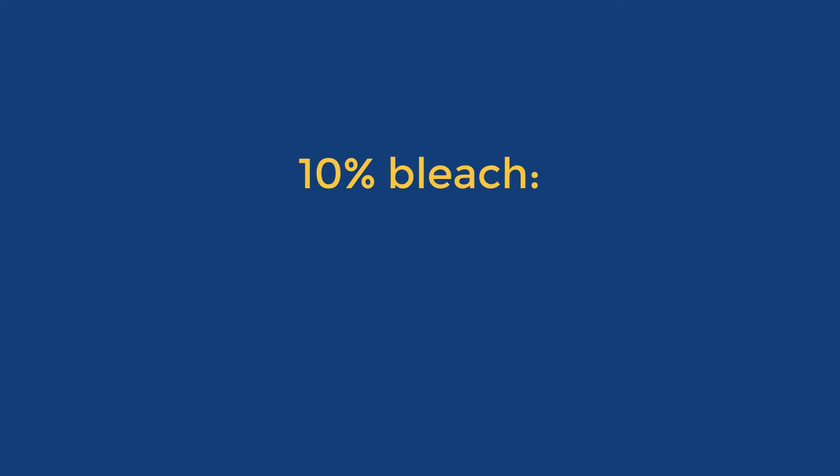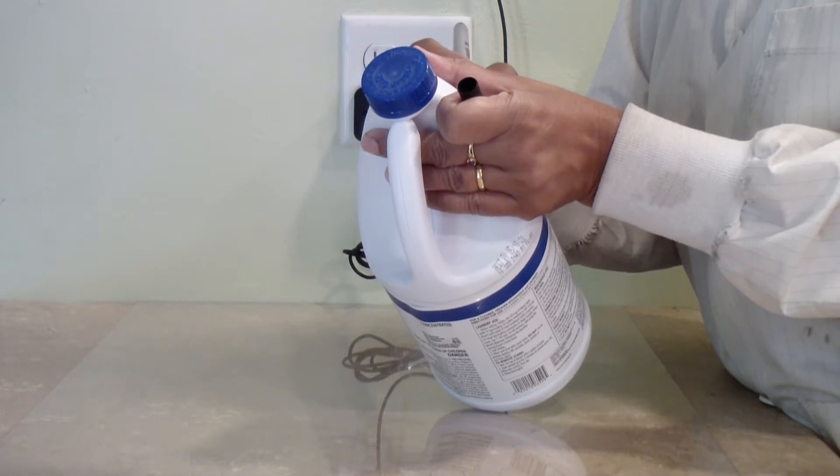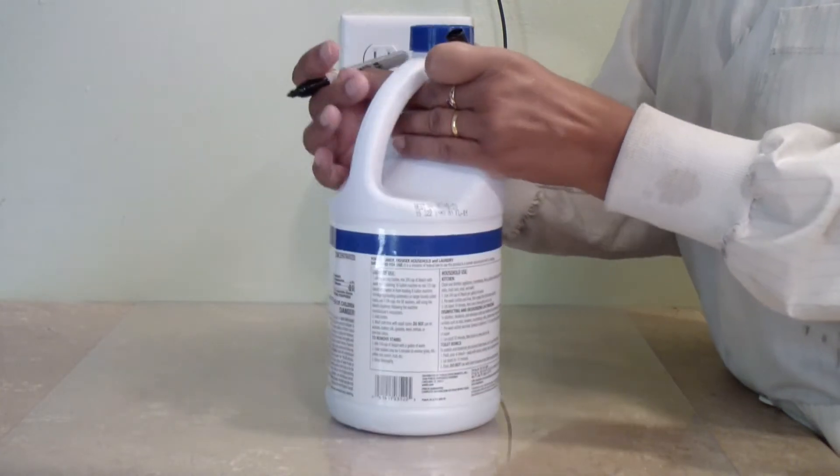You will need 10% bleach to decontaminate plates before you discard them. To make 10% bleach, use any cup or jar to measure an amount of bleach and pour that into an empty bottle or bucket. I just used an empty bleach bottle and marked it with 10% bleach.